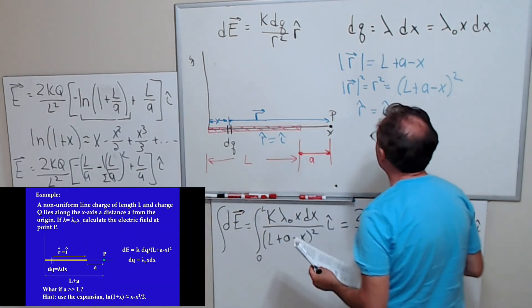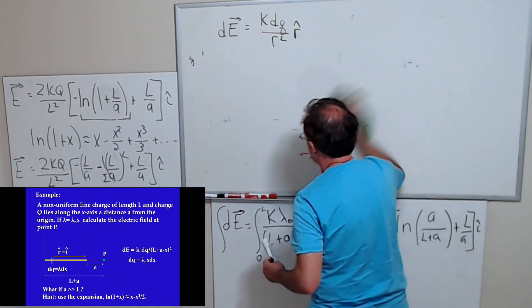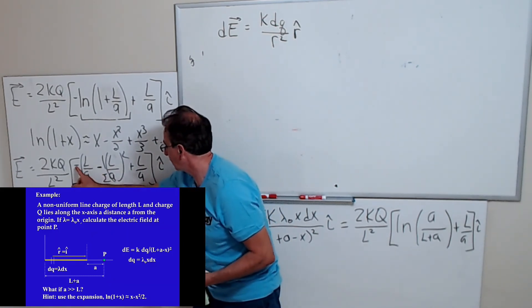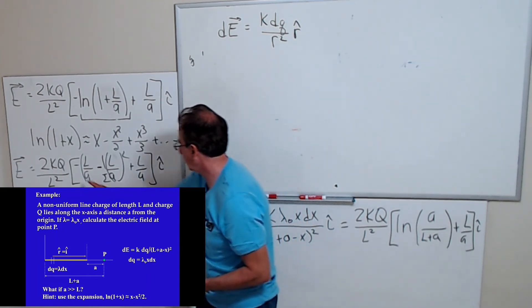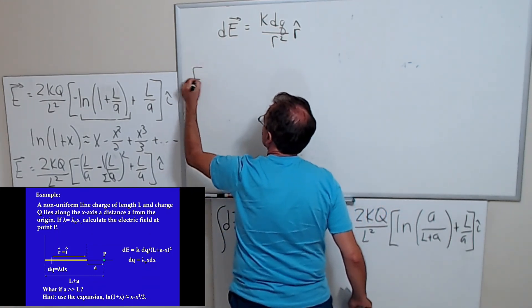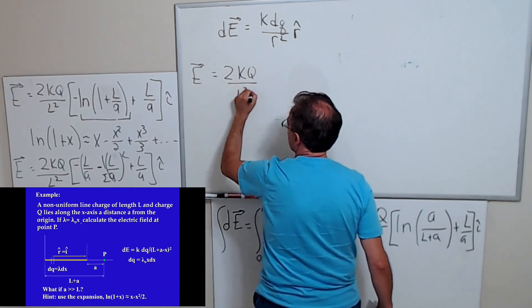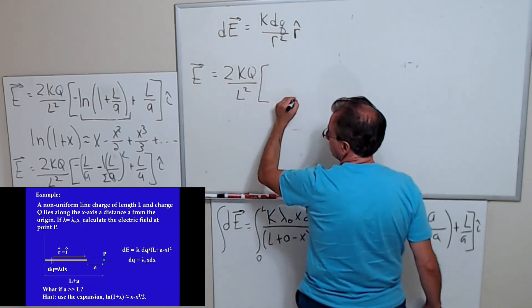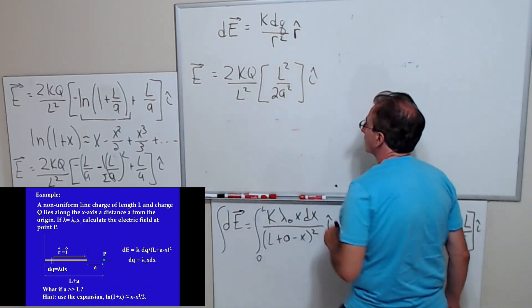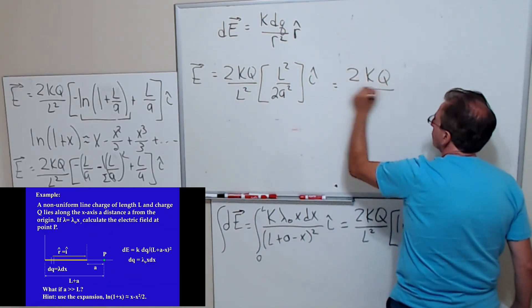Well, it's pretty clear what happens here. If you distribute the minus through, you get a minus L over A plus L over A, and this minus sign cancels with that minus sign. So you end up getting, when you simplify this, 2KQ over A squared.